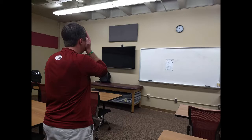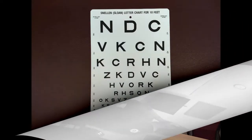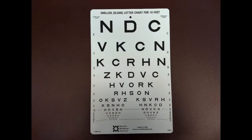The patient will then cover one eye and read the lowest line of letters possible. If the patient misses more than one letter on that line, then he or she should try the line above it. Once the patient has reached a line where he or she can read five out of the six letters, the clinician should record the fraction associated with that line.